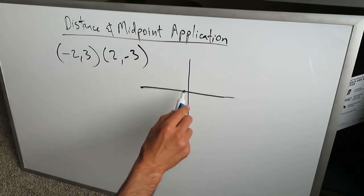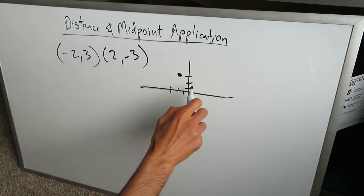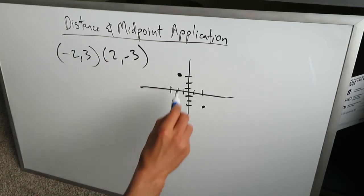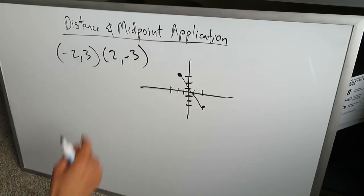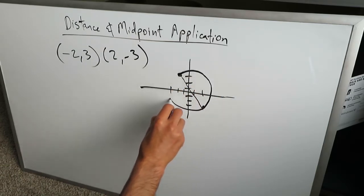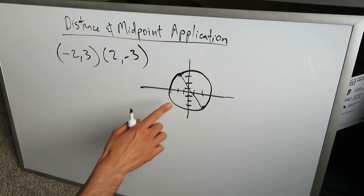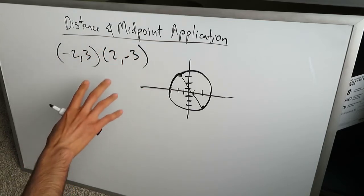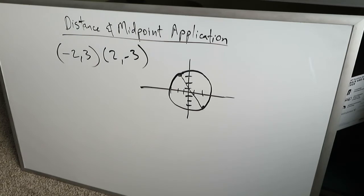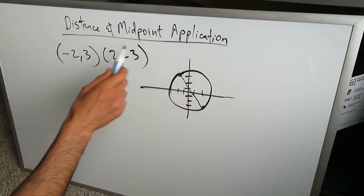Let's graph these points. For minus 2 comma 3, that's here. For 2 comma minus 3, that's down here. Let's make a line because this segment represents the diameter, and we can draw a rough circle. We want to determine the equation of this circle, and we know the circle has a center and a radius. We have to use the distance and the midpoint to determine the center and the radius. The first thing we want to do is determine the center, because the center is the same as the midpoint — the midpoint of the diameter is also the center of that circle.